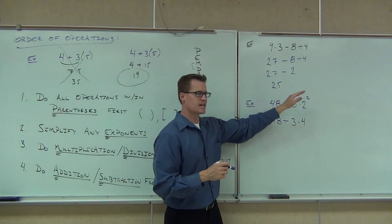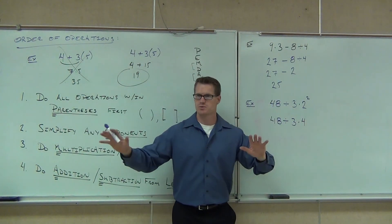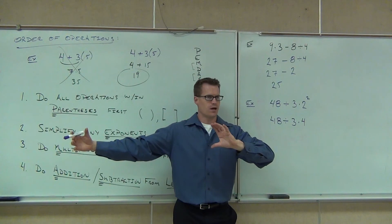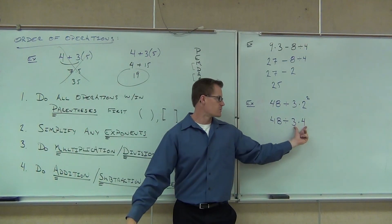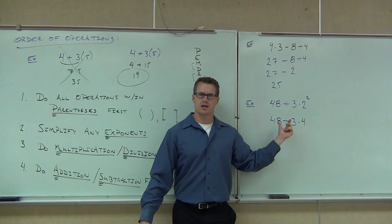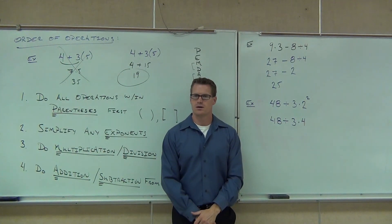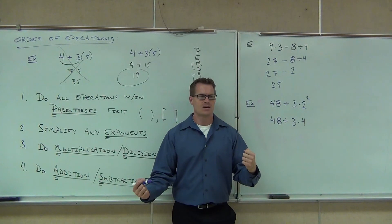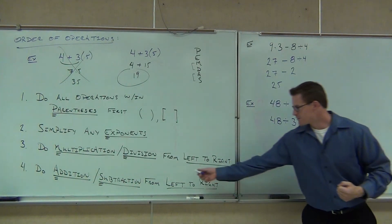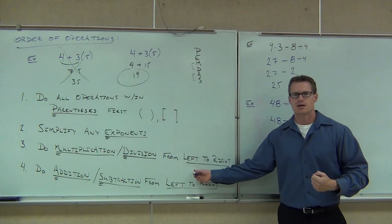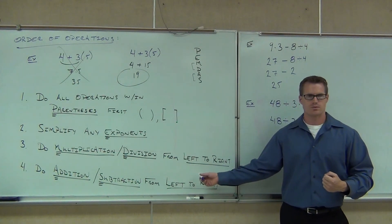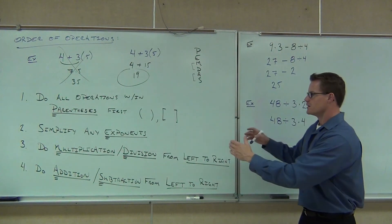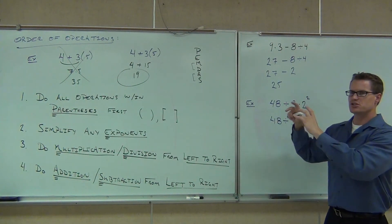We've checked parentheses — none. We evaluated our exponent. Now we're down to multiplication and division, plus subtraction. Multiplication and division came first; we do it left to right. My question to you is: am I supposed to multiply 3 times 4, or divide 48 by 3 first? Divide — because division comes first reading left to right. If you multiply first right now, you will get the wrong answer. When you're down to multiplication and division, it has to go from left to right, just like reading.